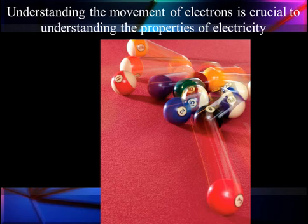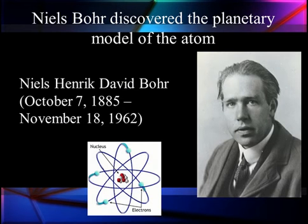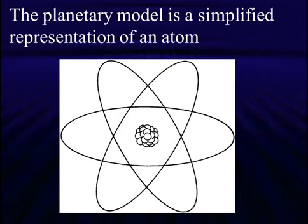Now let's talk about atoms and electrons and get down to the basics very quickly. Niels Bohr discovered and publicized his model of the atom. He made a planetary model like our solar system, the sun and the planets. This is the way he simplified the representation of the atom.